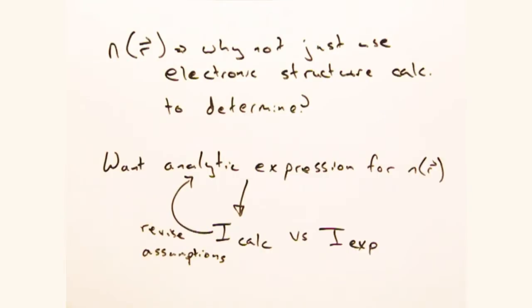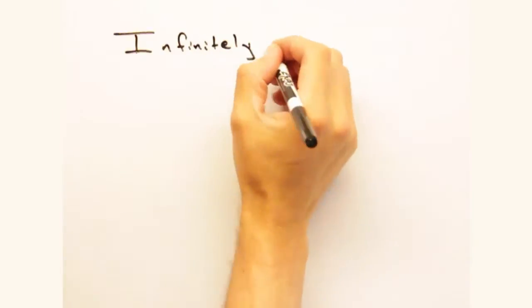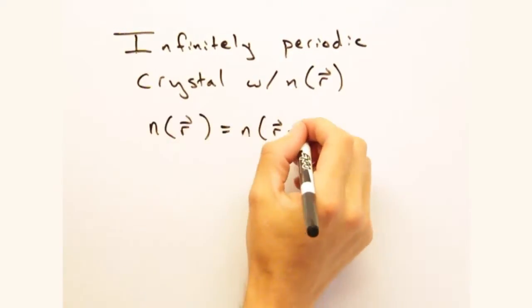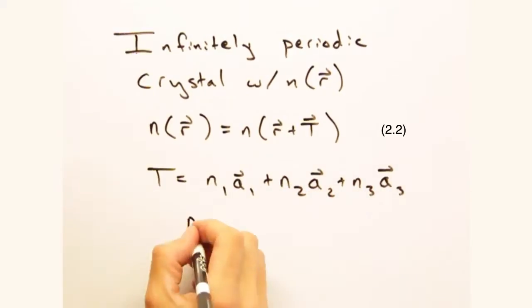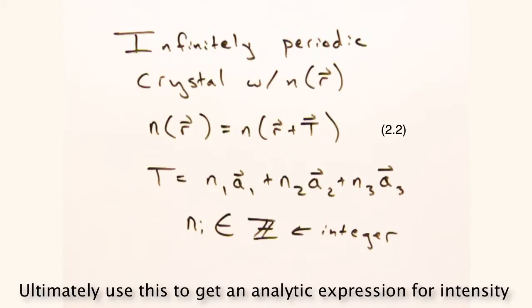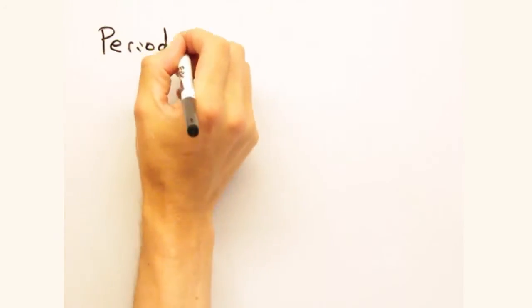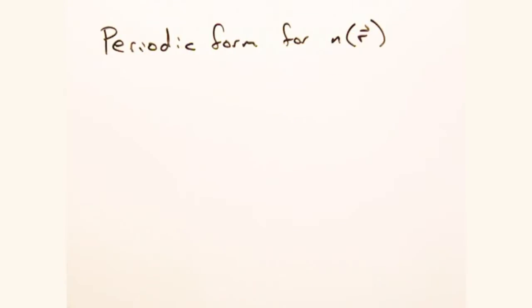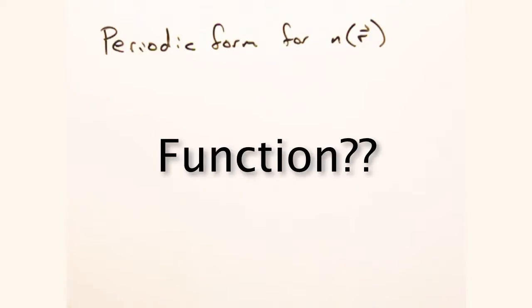Okay, that makes sense. So we're starting with a crystal that's infinitely periodic in all directions, and ultimately we want to get to an analytic expression for intensity. So rather than trying to integrate over an entire sample volume like in the intensity equation, wouldn't it just be easier to choose a periodic form for n of r? Yeah, it would.